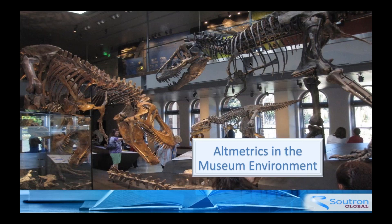What I'm going to talk about is a project proof of concept that I led as part of running the library and archives for the Natural History Museum in the Los Angeles County area. What you see before you are mainly my own pictures — dinosaurs in one of their exhibits — to give you a sense of the environment. I know a lot of you are from the corporate or academic environment, and I want you to think about what I'm talking about for your own environment as I go through this.